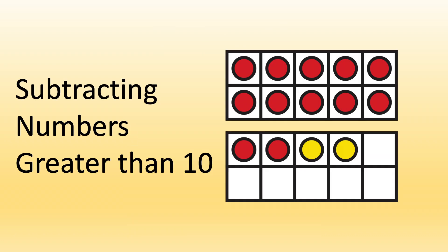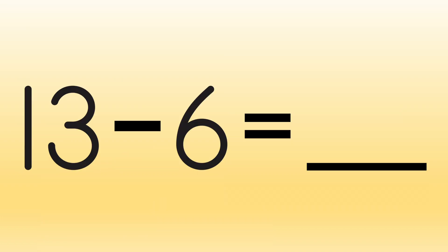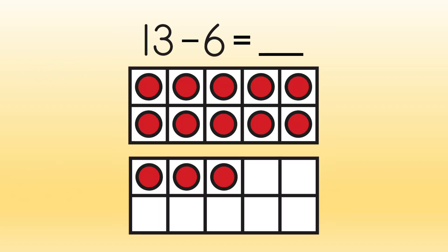We can also subtract larger numbers up to 20 with our tens frames. Here's another subtraction sentence that needs to be solved. 13 minus 6 equals blank. We make sure we fill our frames with 13 counters like this. Next, we'll remove 6 counters.